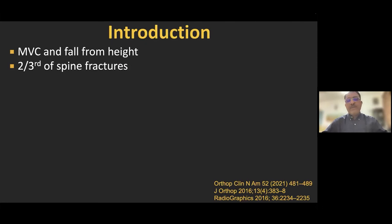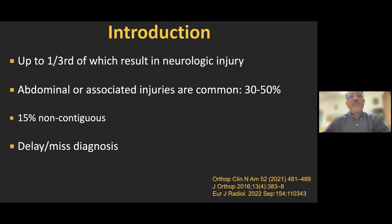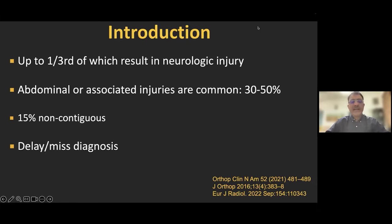Motor vehicle collision and fall from height are some of the commonest mechanisms for thoracolumbar spine trauma and fractures, and almost two-thirds of spine fractures occur in this region. Among the thoracic and lumbar region, T2 to T10 is a relatively uncommon fracture site. The majority of fractures occur between T10 and L2 because this thoracolumbar junction is a biomechanically transitional and susceptible zone. These fractures are important because up to one-third result in neurologic injury, 30% are associated with abdominal or other injuries, 15% are non-contiguous fractures, and they are frequently delayed in diagnosis or missed entirely.